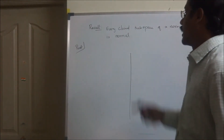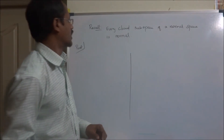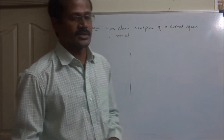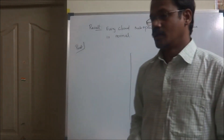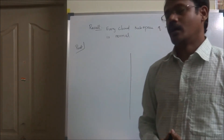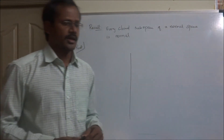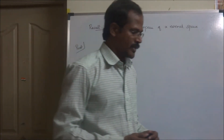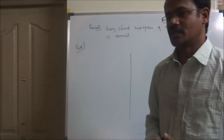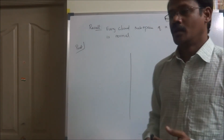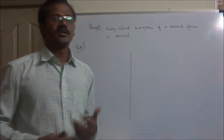Now we have the following result: every closed subspace of a normal space is normal. We remark that not every subspace of a normal space is normal — there are plenty of examples available in the literature. In later videos we will give an example of a normal space and a counterexample showing that a subspace of a normal space need not be normal.